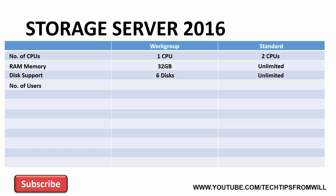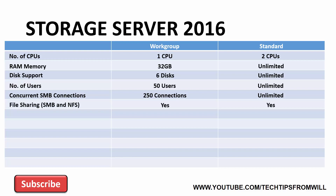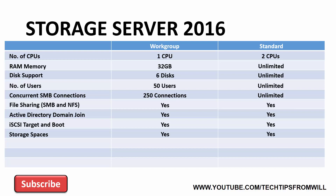From a user limit standpoint, the Workgroup edition has a maximum limit of 50 users, while Standard supports an unlimited number of users. Also, the Workgroup edition imposes a limit of 250 concurrent SMB connections, whereas the Standard edition has no such limits and supports an unlimited number of connections. Beyond this, both editions of Storage Server 2016 support SMB and NFS file sharing, Active Directory domain join, iSCSI target and boot functionality, and Windows Storage Spaces.